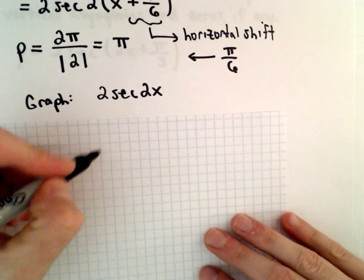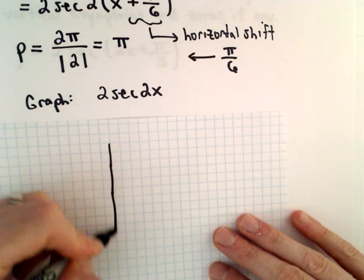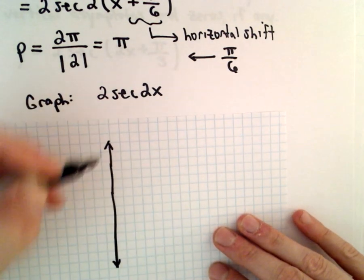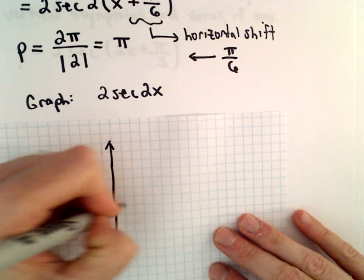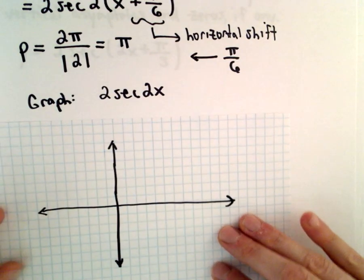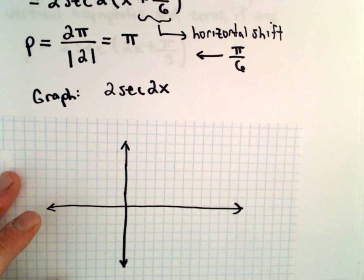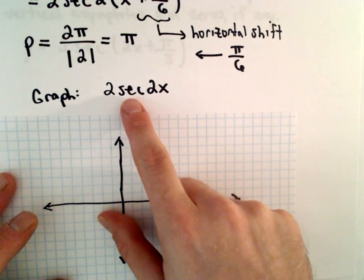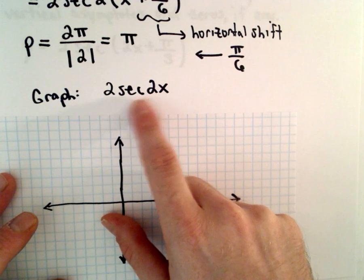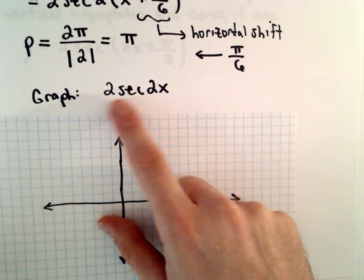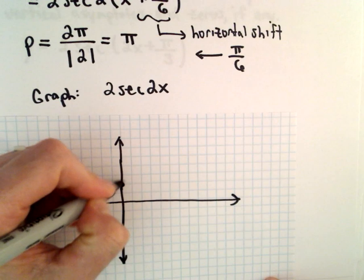Okay, so let's graph 2 times secant of 2x. So if we substitute in, for example, x equals 0, at x equals 0, secant of 0 is going to be equal to 1 times 2 will give us 2.